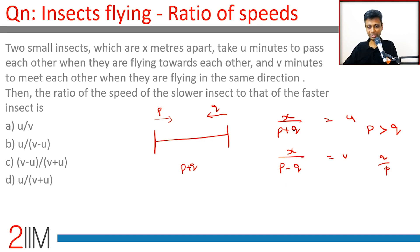Very simple, divide one by the other. If you divide this by this we will get p minus q by p plus q equal to x by p plus q, equal to u by v, so p minus q by p plus q is equal to u by v.